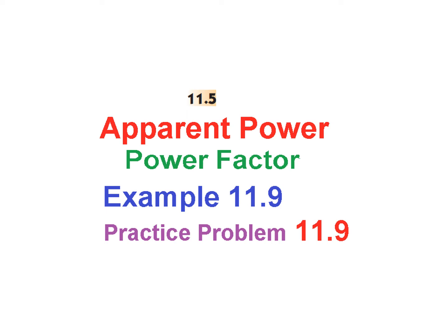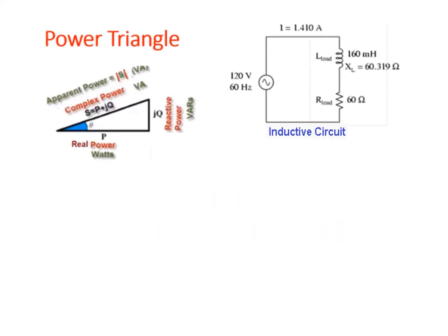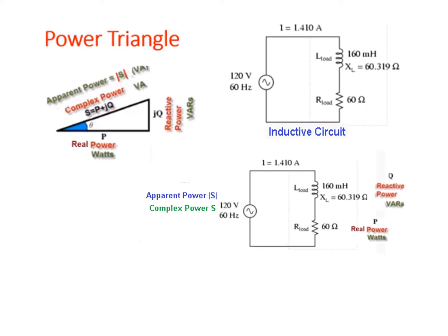In this video we'll discuss apparent power and power factor, and will also solve Example 11.9 and Practice Problem 11.9. First, let's discuss apparent power with the help of a diagram. There is a power supply of 120 volts at 60 Hz with a resistance and inductance in series — this is called an inductive load or inductive circuit.